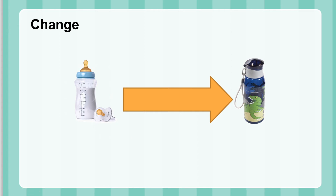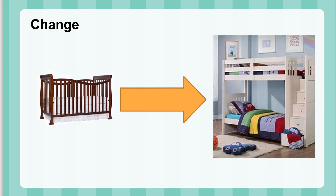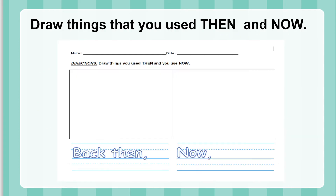So before, you used to drink milk from a baby bottle or have a pacifier. But right now, you can drink water or anything from a bottle or a glass, right? When you were a baby, you used to sleep in a crib. And right now, you are using a bed. So that is what we call change. Guys, I can't wait to see your pictures and your drawings right here. Tell me what things you used then and what things you use now.